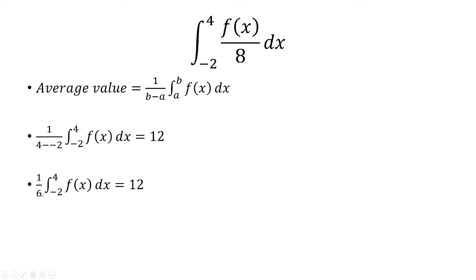Well, how do we get 1 eighth here? We want to get rid of the 6. How do you get rid of the 6? That's by multiplying both sides by 6, and then you replace the 6 with an 8 by dividing by 8.